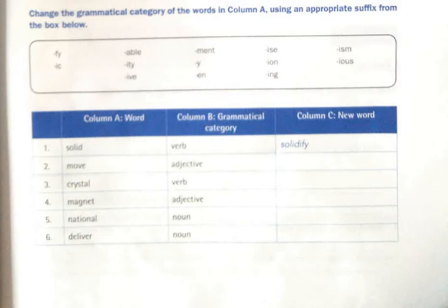Next you have move. You have to make it into an adjective. It is movable or moving. Crystal, you have to make it into a verb. It is crystallize. Magnet, you have to make it into an adjective: magnetic.